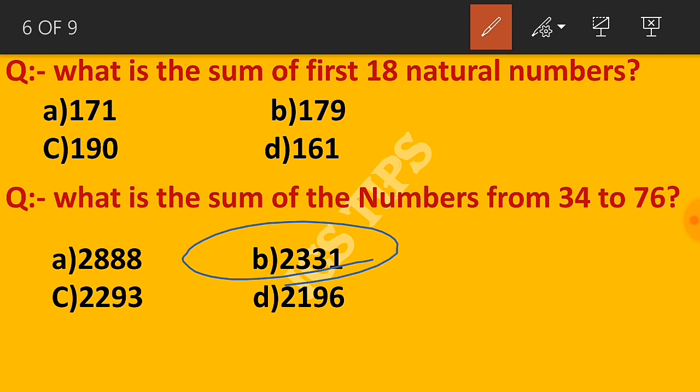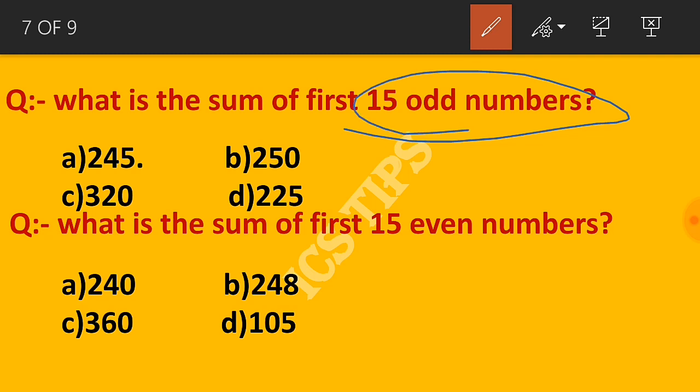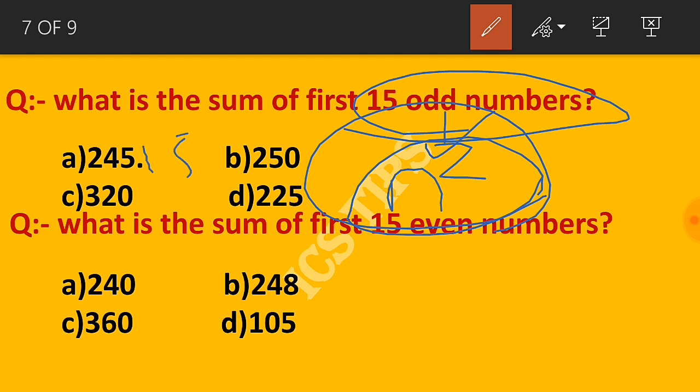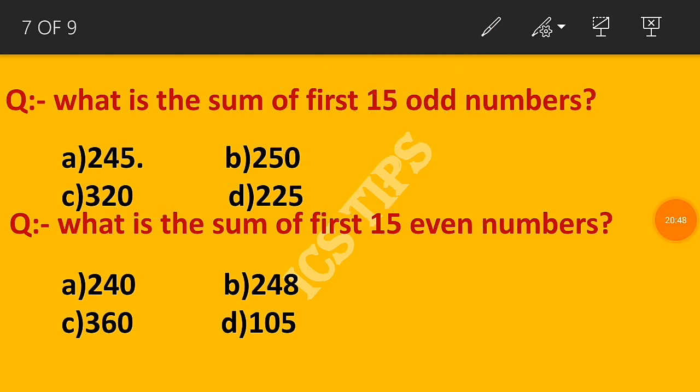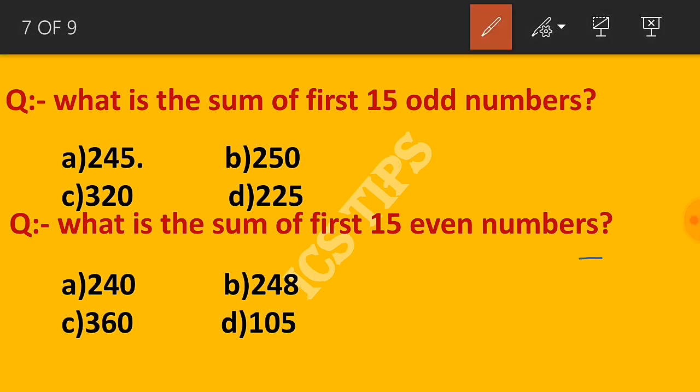Question: What is the sum of first 15 odd numbers? The formula for odd numbers is n squared. So 15 squared equals 225.